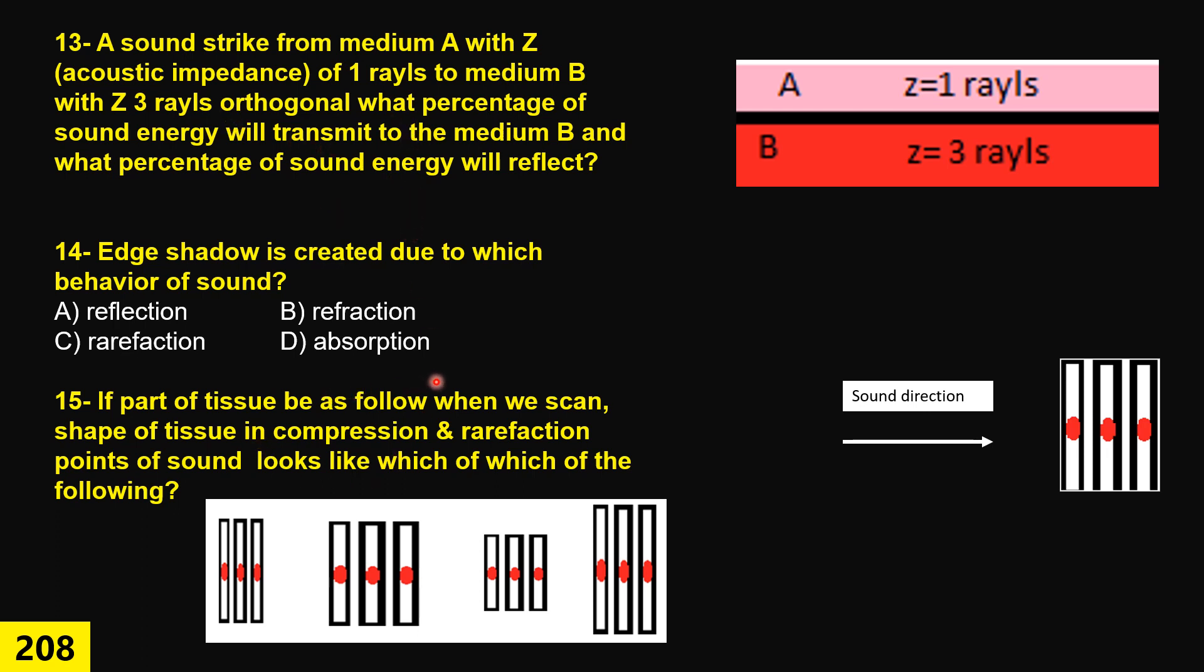Question 14. Edge shadow is created due to which behavior of sound? Reflection, refraction, rarefaction, or absorption. Just when you are going to specialize in the exam, make sure what you read because they are very close to each other. Sometimes they give tricky questions.